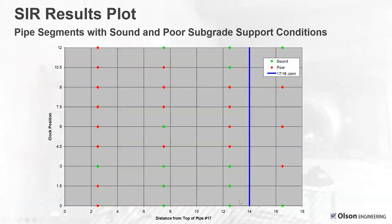Results were plotted for various sections of the pipe, mapping sound and poor support using clock positions from 0 to 12 o'clock, testing every 1.5 hours around the inside of the pipe. This was used to evaluate which sections had poor support conditions so that repairs could be done improving the subgrade support around the pipe.